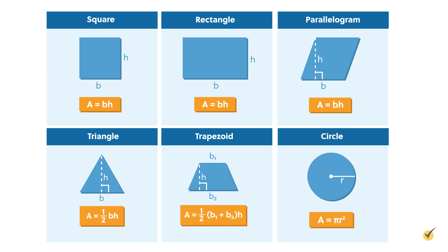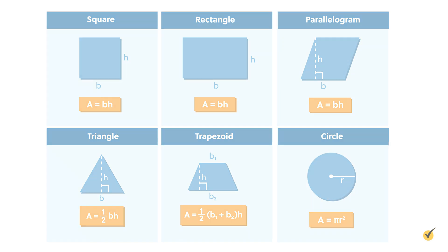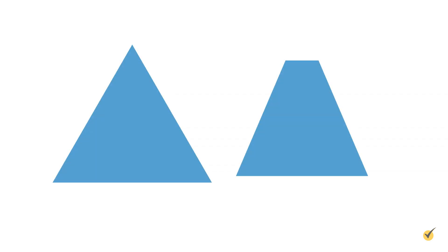And the area of a circle is equal to pi times the radius squared. Now let's take a look at some examples of how to solve for the area of a triangle and the area of a trapezoid.